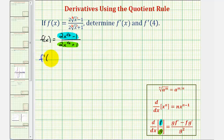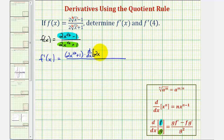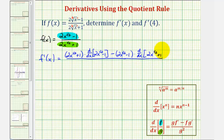So f prime of x will be equal to the denominator, which is two x to the one half plus one, times the derivative of the numerator — the derivative of two x to the one half minus one — then minus the numerator, two x to the one half minus one, times the derivative of the denominator, the derivative of two x to the one half plus one. All over the denominator squared, which is two x to the one half plus one squared.